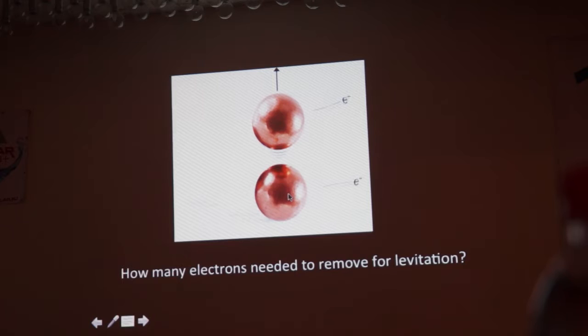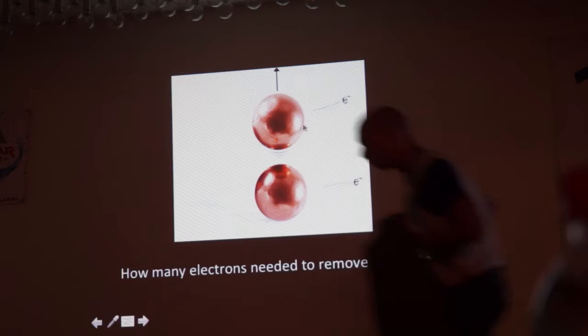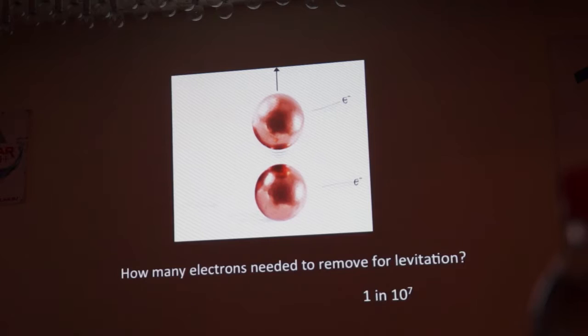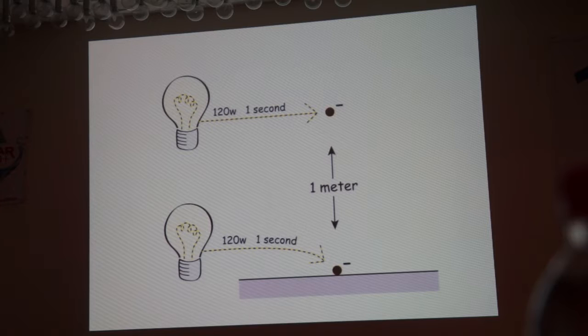Here's another example - taken from standard textbooks. You take two copper balls sitting on one another, and you start removing electrons from each one. They become positive and repel each other - and if they repel enough, one will rise up. How many electrons do you need to remove? The answer is one in ten million. That's all it takes to get these heavy copper balls, one of them to levitate.